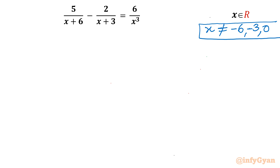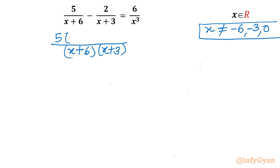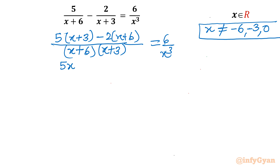Let us consider the LCM. I will write denominator (x+6)(x+3). Now I will cross multiply: I will write 5 times (x+3), then minus 2 times (x+6), and the right hand side unchanged as 6 over x³. So let us expand: 5x + 15 minus 2x minus 12 over (x+3)(x+6).